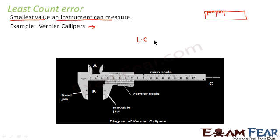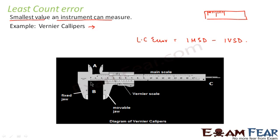Least count error arises when the zero of the main scale and the zero of the vernier scale do not coincide. We define least count error as one main scale division minus one vernier scale division. Least count error arises when the smallest value that an instrument can measure has certain uncertainty involved in it. If the zeros of the main scale and vernier scale coincide exactly, then there is no least count error. But if they do not coincide exactly, then there is a least count error involved.